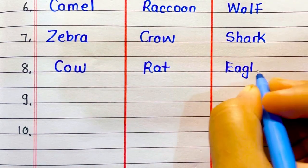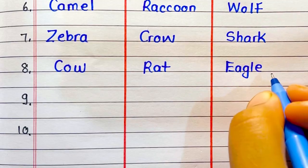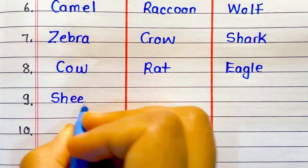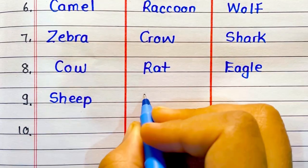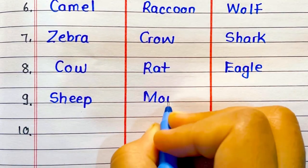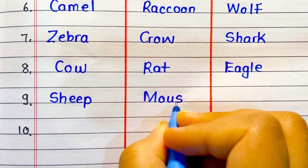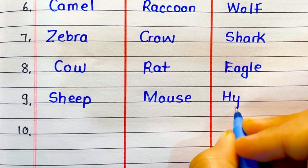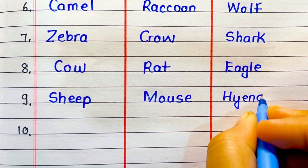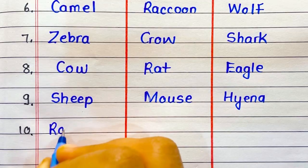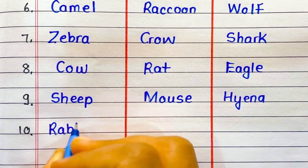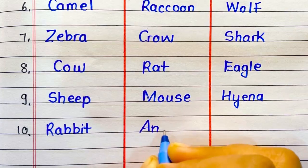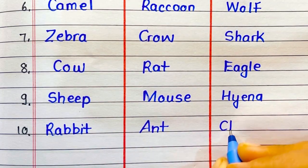Herbivore: cow, sheep, rabbit, ant. Omnivore: rat, mouse, raccoon. Carnivore: eagle, hyena, cheetah.